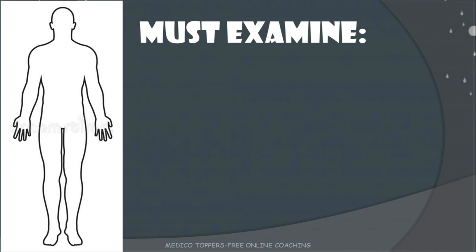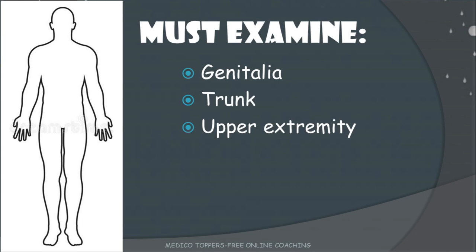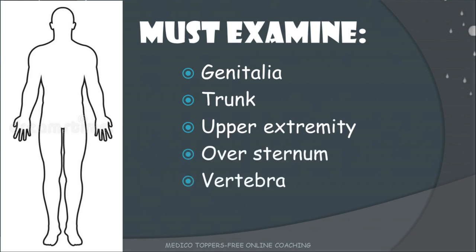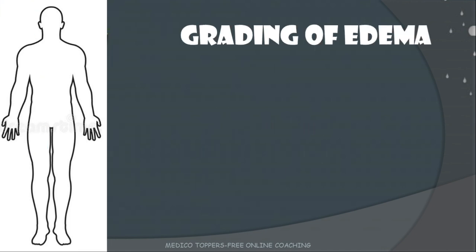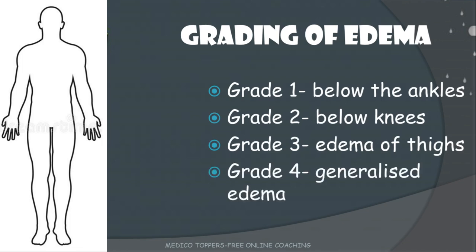Other areas which must be examined in a patient having edema include the genitalia, trunk, upper extremity, over the sternum, over the vertebrae, and the forehead — these are all the parts we should not leave out while examining. Regarding the grading of edema: Grade 1 is below the ankles, Grade 2 is below the knees, Grade 3 is edema of the thighs, and Grade 4 is generalized edema.